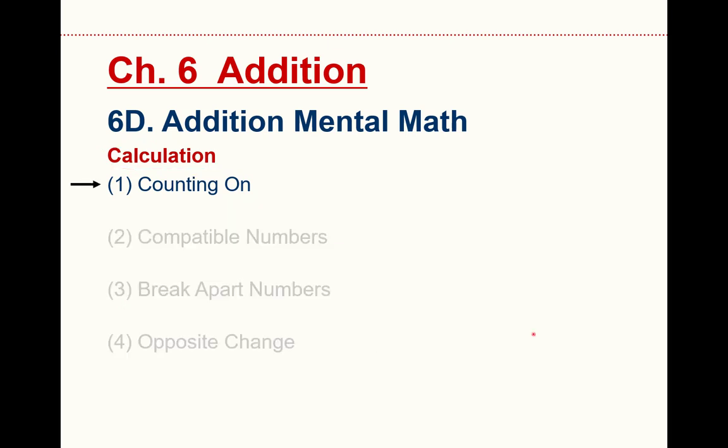In calculation, the first technique is called counting on. This is the simplest and it's one I don't actually recommend that much. If you have a small number that you're adding, like 234 plus 2, you think 234, add 1 is 235, add another is 236, and my answer is 236. You're just counting up.